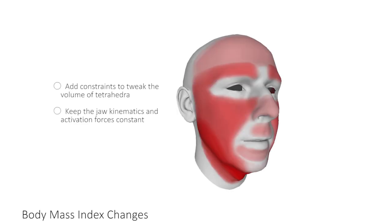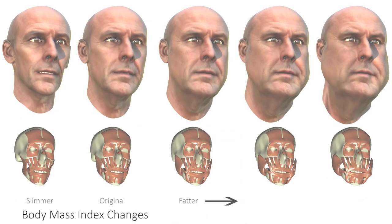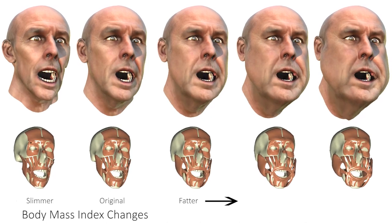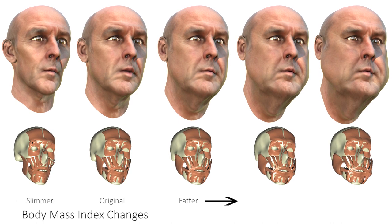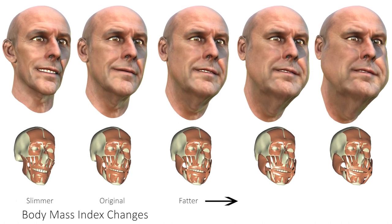Let's now look at some example applications which showcase the capabilities of the proposed reconstruction and animation pipeline. The first one is body mass index changes — that is, slimming and fattening of the reconstructed characters. In order to do so, we simply draw a fat map in UV space and add constraints in the optimization that tweak the volume of the tetrahedra. Finally, we animate the character as usual while keeping the jaw kinematics and activation forces constant. Note how the dynamics of the face change slightly, and how the slim faces follow the bone structure underneath.